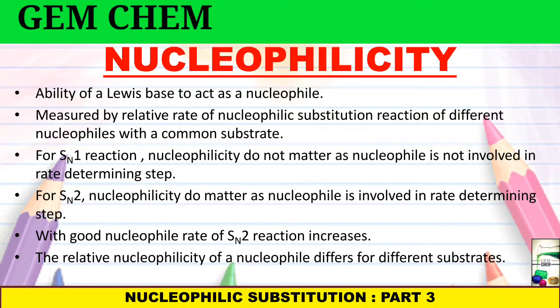Now for SN1 reaction, nucleophilicity does not matter as the nucleophile is not involved in the rate determining step. As we have seen in the first video, in the rate determining step there is only formation of carbocation and next the nucleophile gets added in SN1 reaction. Whereas for SN2 reaction, since both attack and leaving of the group takes place in one step, the nucleophile is involved in the rate determining step. With good nucleophilicity, rate of SN2 reaction increases as if the nucleophilic attack is strong, then the leaving group will easily go away and the rate of the reaction increases.